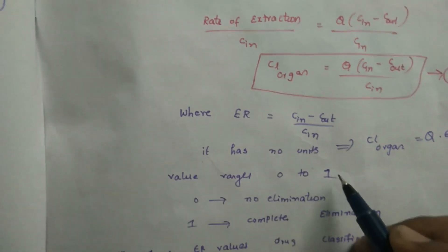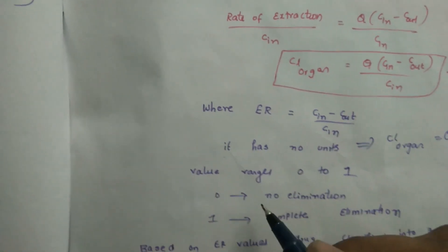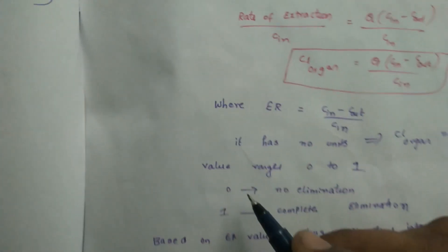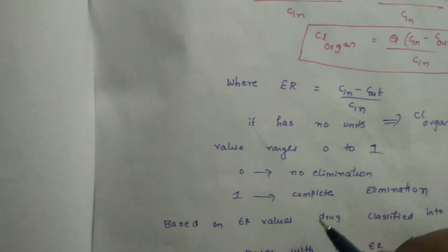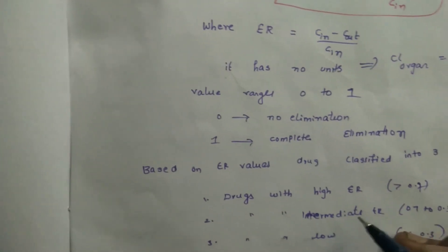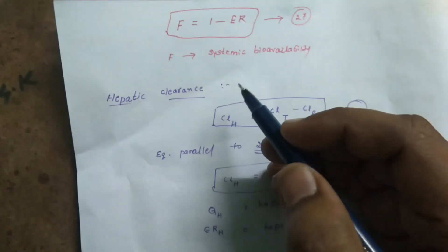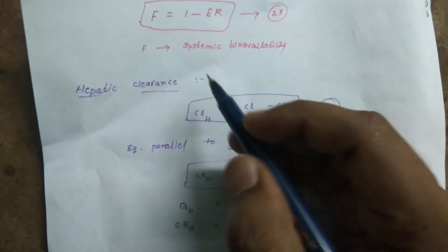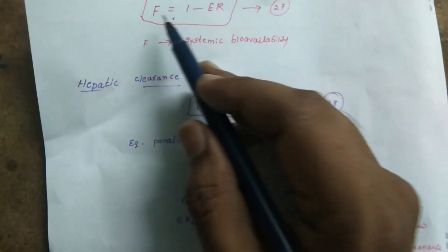The extraction ratio ranges from zero to one. When ER equals zero, there is no elimination; when ER equals one, there is complete elimination. Based on ER, drugs can be classified as having high ER, moderate ER, or low ER. Systemic bioavailability can also be estimated from ER: F equals 1 minus ER.